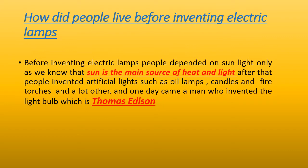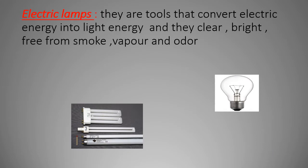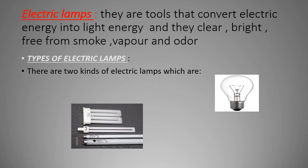What's the meaning of the light bulb? First, we must know what the meaning of electric lamps. They are tools which convert electric energy into light energy. The electric lamps are clear, bright and free from smoke, vapor and odor. We have two types of electric lamps: electric bulb and fluorescent lamp.